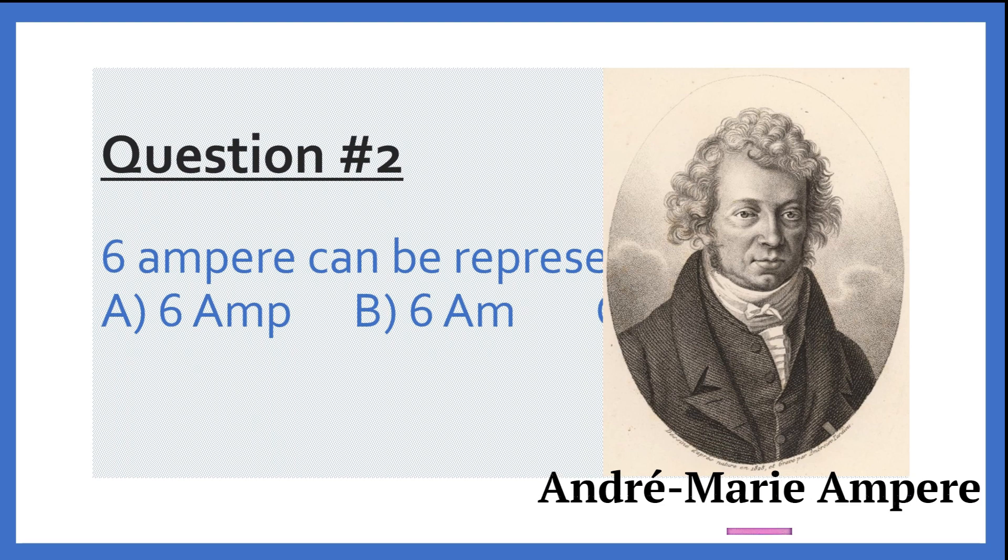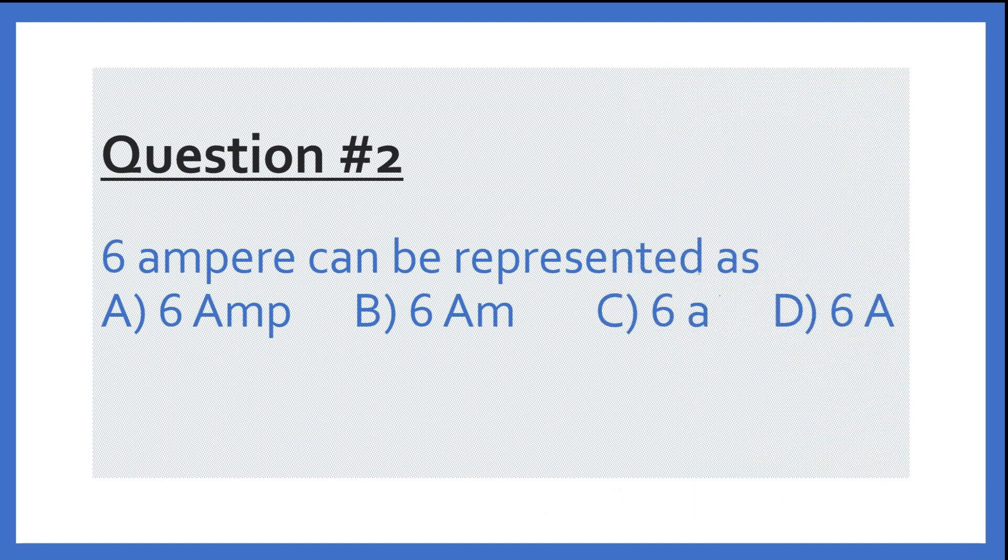The next question is, and before that look at this picture. This is the picture of Andre Marie Ampere. And why we are discussing that you will understand. So 6 amperes can be represented as. So 6 amperes. What is 6 amperes? So how to represent in the symbol? So 6 amperes is name of a scientist. So the letter should be capital and its symbol is just A. So which is that? That one is the D option. So the correct answer for this is 6 amperes can be written as 6A. Easy, very easy I hope.